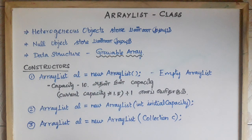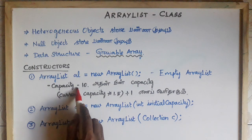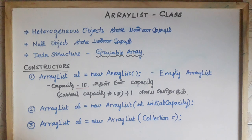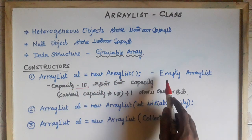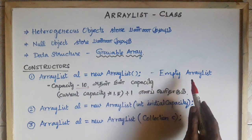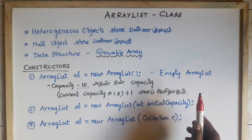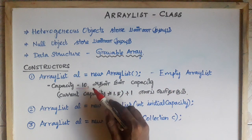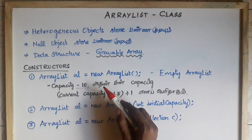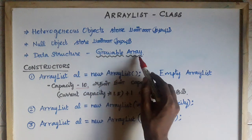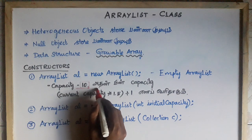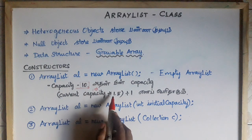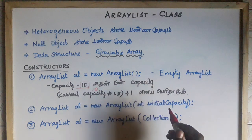In the ArrayList, there is a size and a capacity. The default capacity of an ArrayList is 10. If you have 10 elements in the ArrayList and need to insert more, the capacity grows: the new capacity is calculated as the current capacity into 1.5, which gives 15, plus 1, making 16. The old array is then replaced by the new growable array.